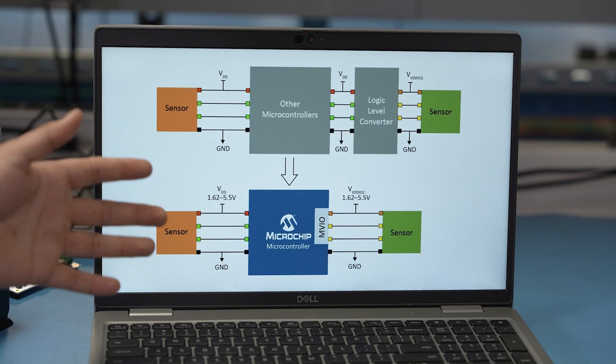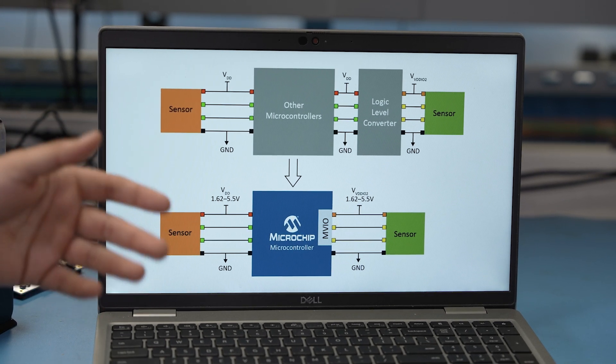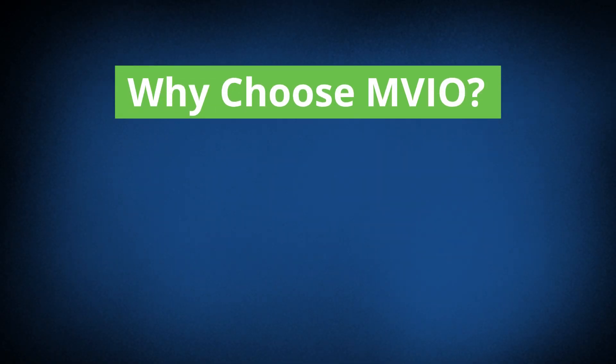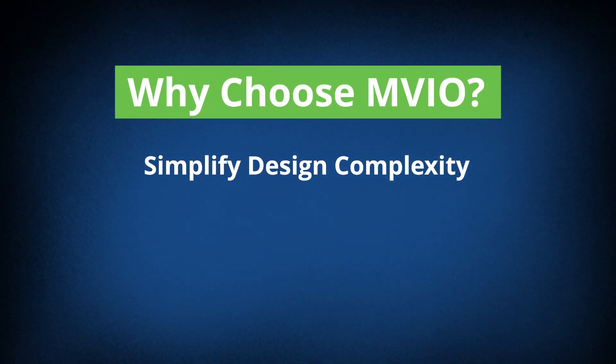MVIO works with both GPIO and select peripherals, providing the flexibility needed for diverse design requirements while simplifying multi-voltage systems. And when you buy microcontrollers that have MVIO, you're not just getting the microcontroller and MVIO — you're also getting a full set of other peripherals, ranging from analog peripherals to communication peripherals. This essentially provides a whole product solution for a diverse range of applications.